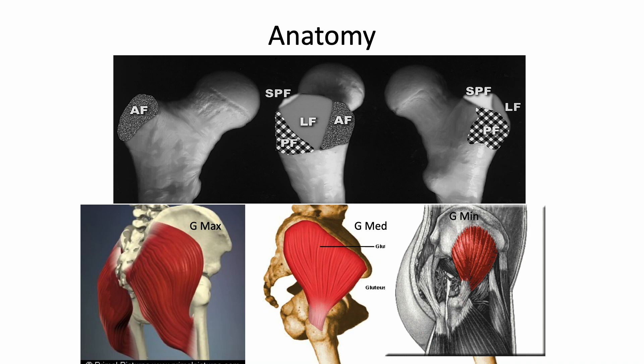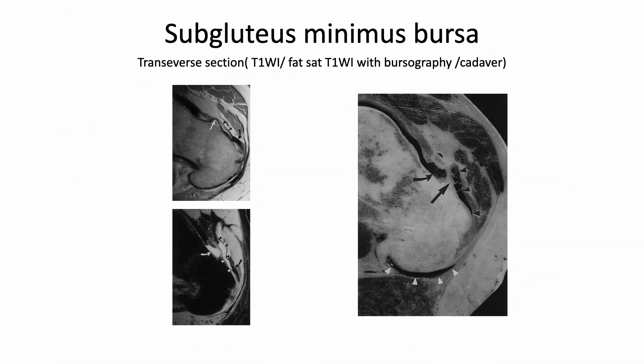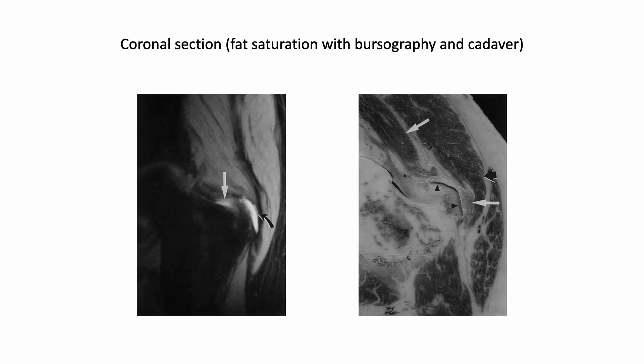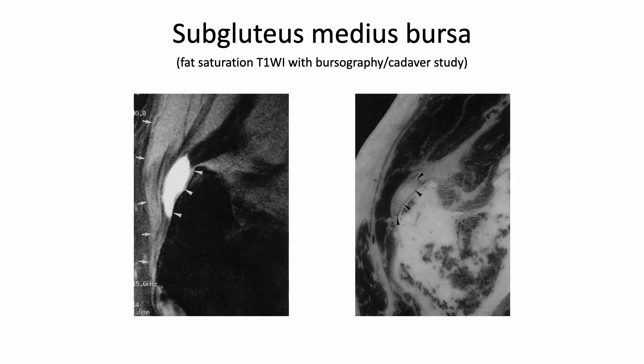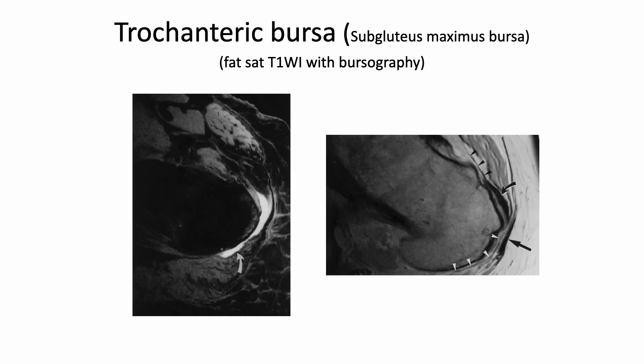Gluteus maximus and tensor fascia latae overlie the greater trochanter. The subgluteus minimus bursa is the most anterior, placed between the greater trochanter and the gluteus minimus tendon. The gluteus medius bursa is placed above the middle facet under the gluteus medius tendon. The subgluteus maximus bursa is placed between the greater trochanter and gluteus maximus, and is often called the trochanteric bursa.